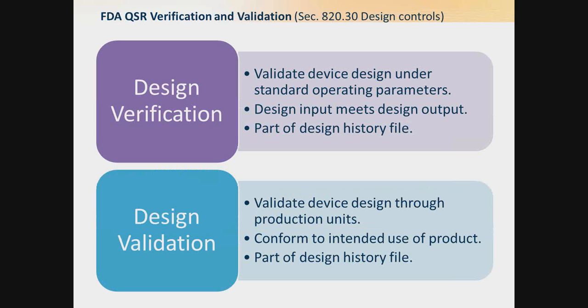Looking at the potential quality system regulations for verification and validation: design verification involves validating the design and the standard operating procedures. The design input is required to meet the design output and forms part of the design history file. Design validation, in contrast, is validating the device through development of production units, confirming that the intended use of the product is a fit for the customer — and this is also part of the design history file.